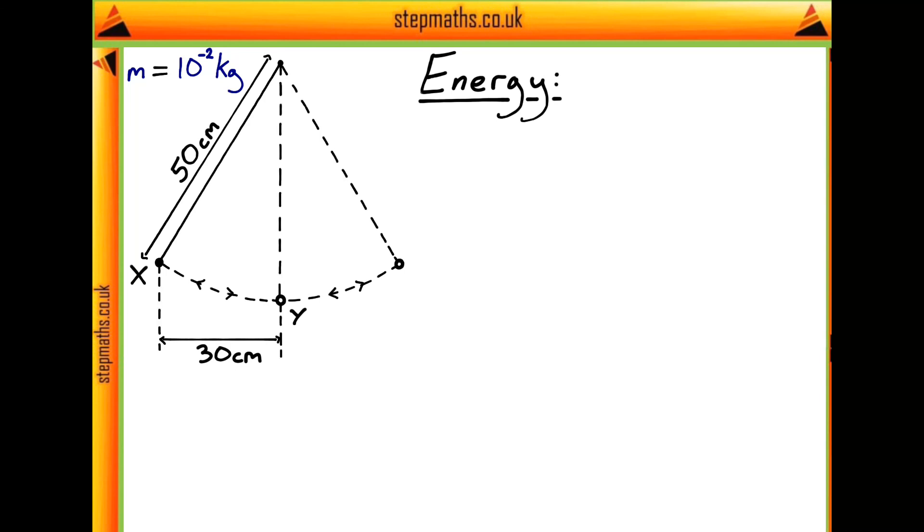So what's our initial energy going to be at position x? Well, we know that the bob is initially stationary, so its only energy is going to be potential energy, which is given here by mgh, where h is this height that I've labelled on our diagram here.